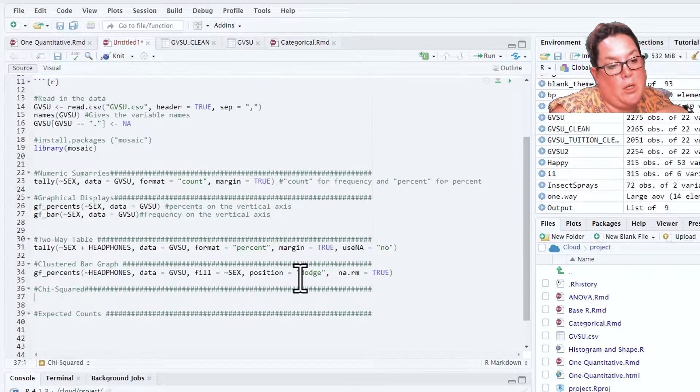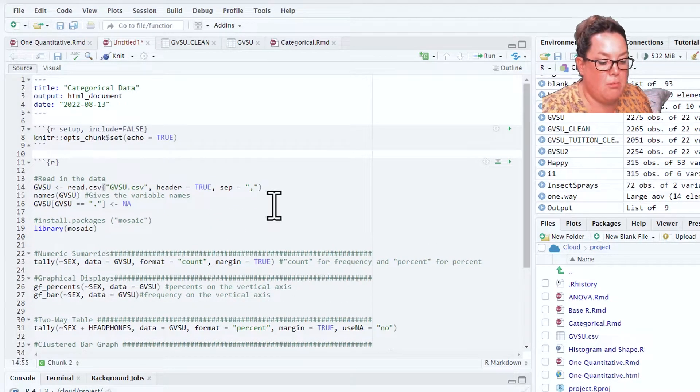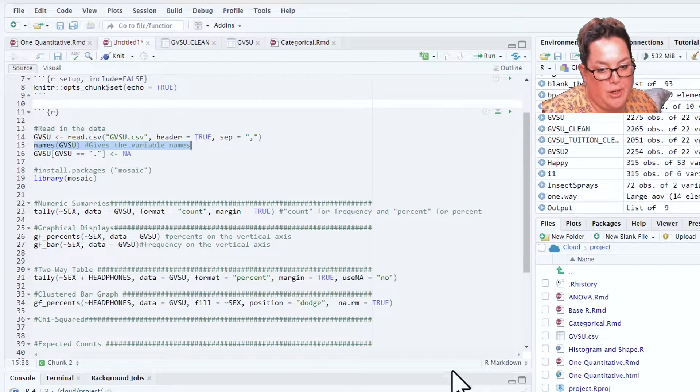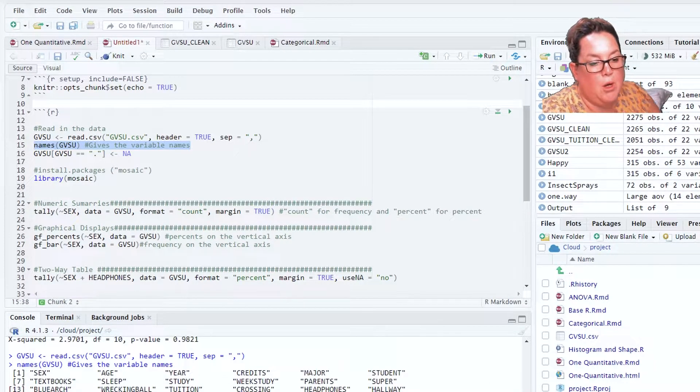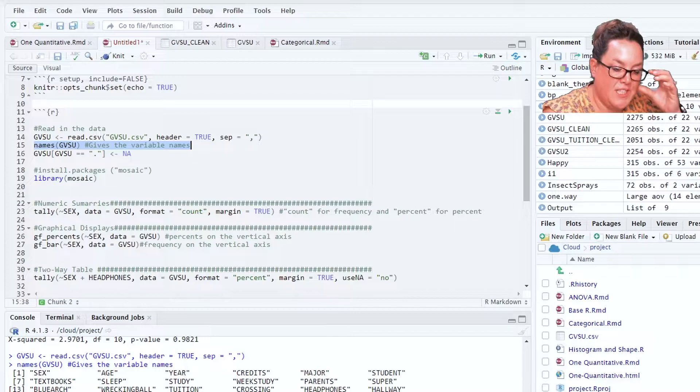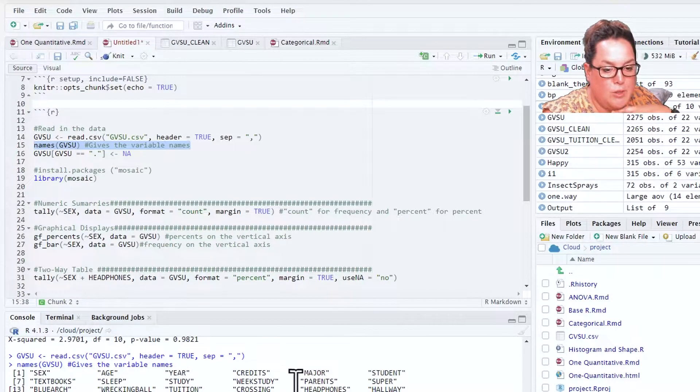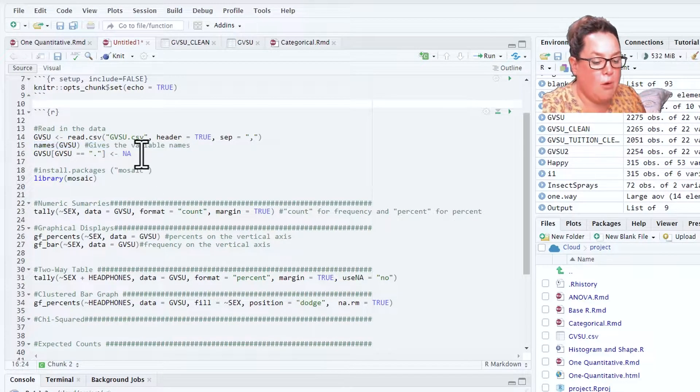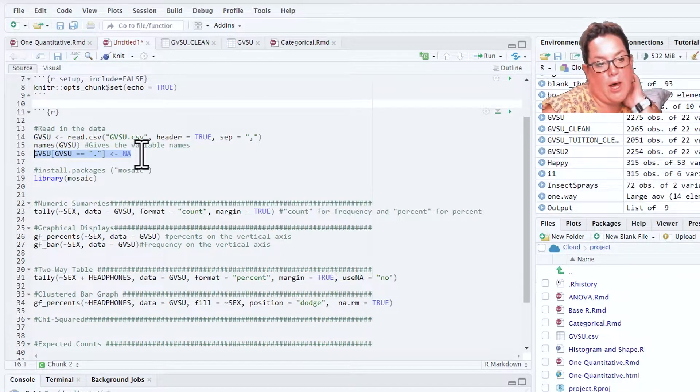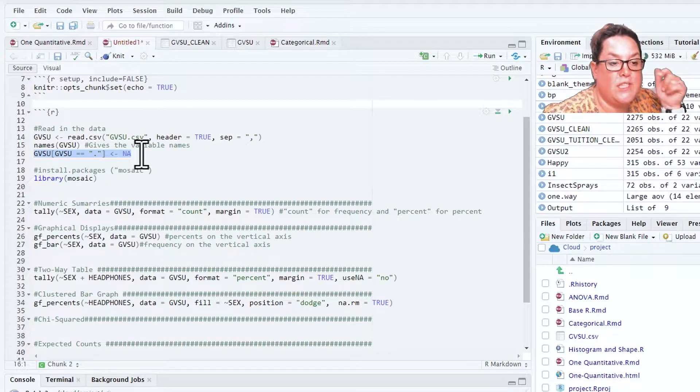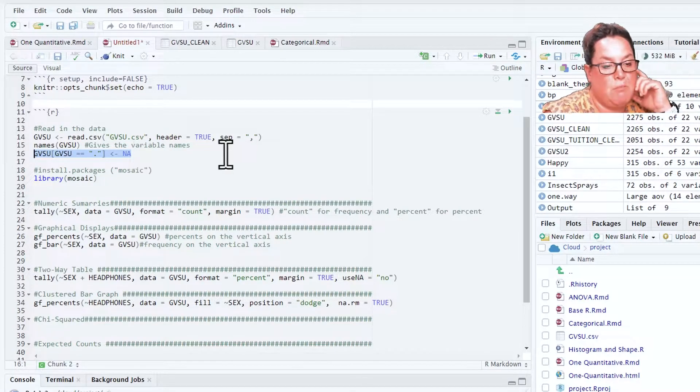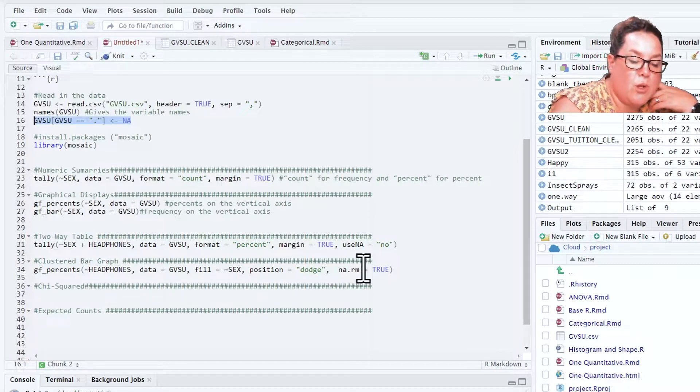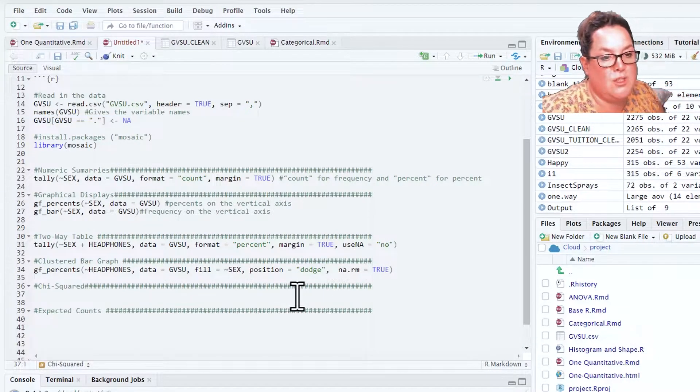I'm going to start by reading in my data and then I'm going to remind myself of the variable names. We need two categorical variables and we're going to do year and whether or not a student is superstitious. Then I want to tell R that if it sees a period it should recognize that as a missing value because those will mess with our columns and create some issues when we review conditions.